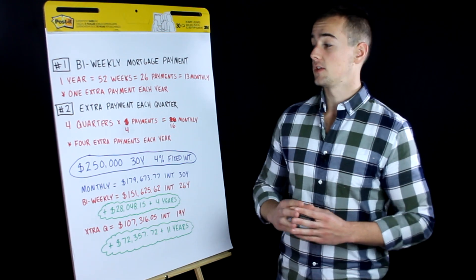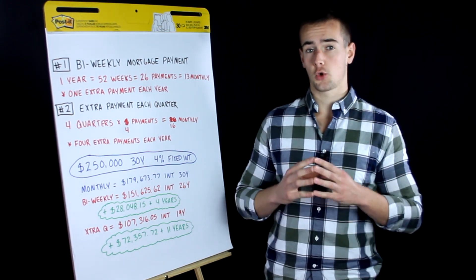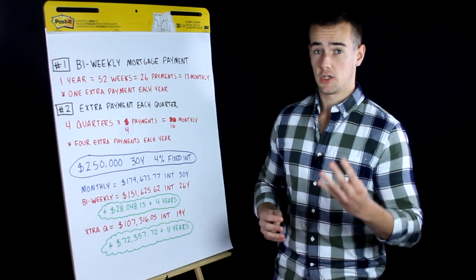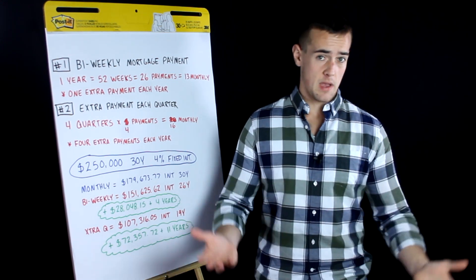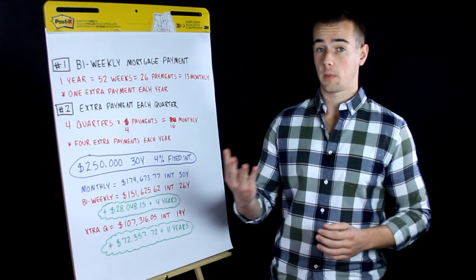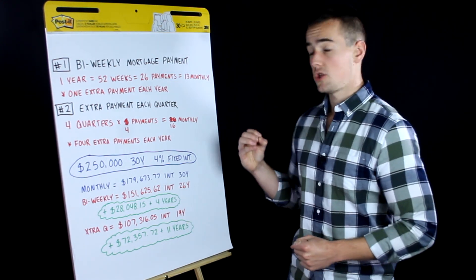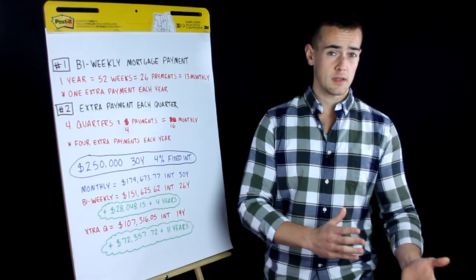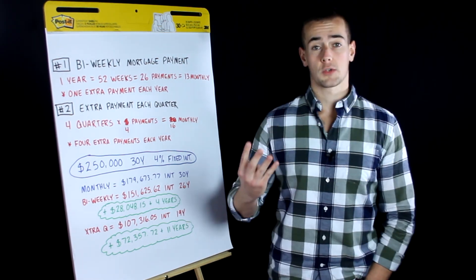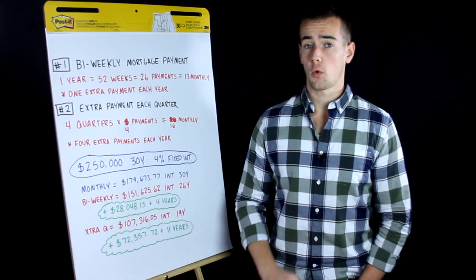But the second strategy is to make an extra payment each quarter. So there are four quarters in each year, and rather than making three payments per quarter, you are going to make four payments per quarter. So each year that is sixteen monthly payments. So by doing this, you are making four extra payments each year on your mortgage.